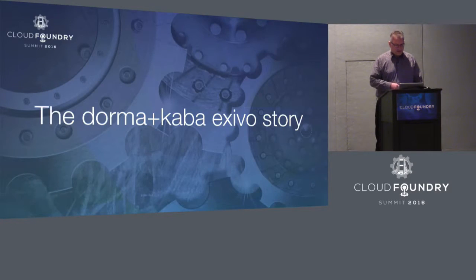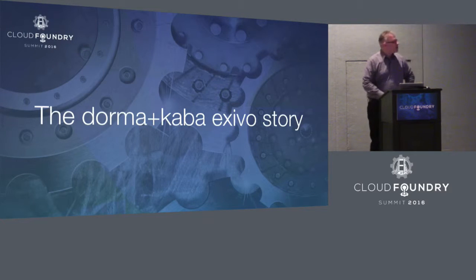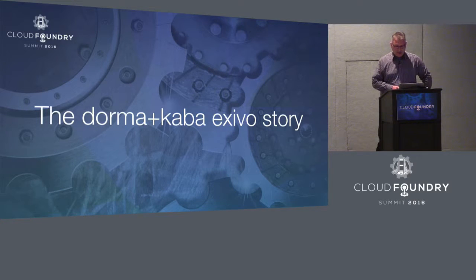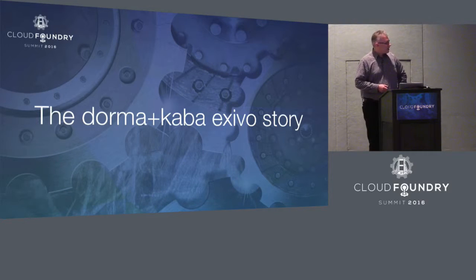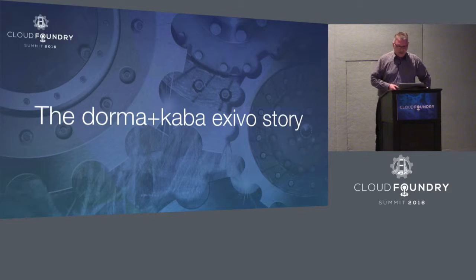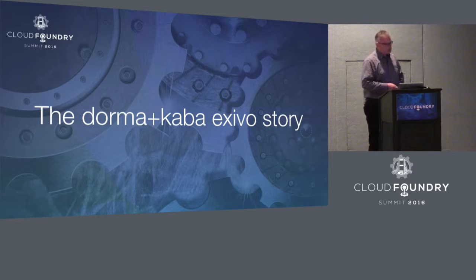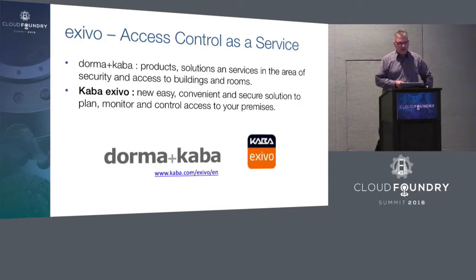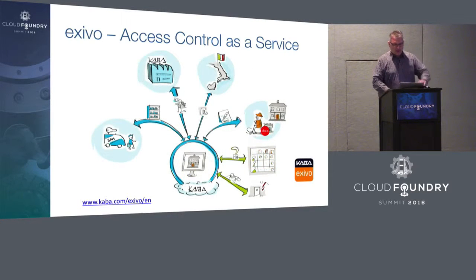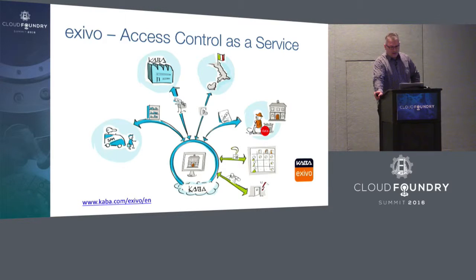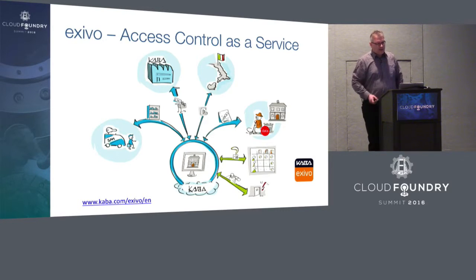It all began when Kaba decided to develop an application to disrupt the market for access solutions for premises. They decided to implement a new, easy, convenient, and secure solution to plan, monitor, and manage access to your premises. This product was called Kaba Exevo. The idea of Kaba Exevo is to integrate ordering, pre-sales, offering, installation, support, and the operation of your access solution — doors, devices, keys, etc. — by integrating everything into a central solution.